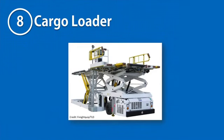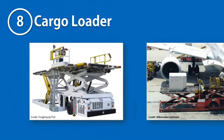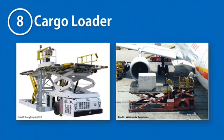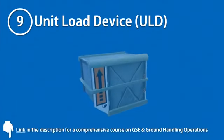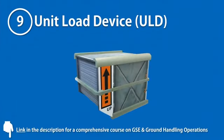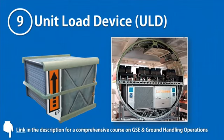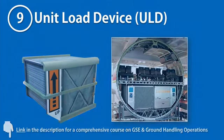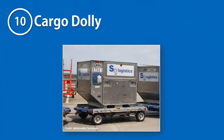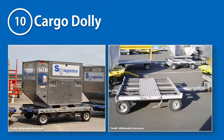A cargo loader is a heavy duty ground support equipment used for loading cargo on widebody aircrafts. A unit load device, or simply ULD, is a standardized container used for packaging cargo efficiently for easy loading and storage inside the aircraft's cargo compartment. Unit load devices are loaded over what's called a cargo dolly, which is a non-motorized piece of ground support equipment towed by a towing tractor.